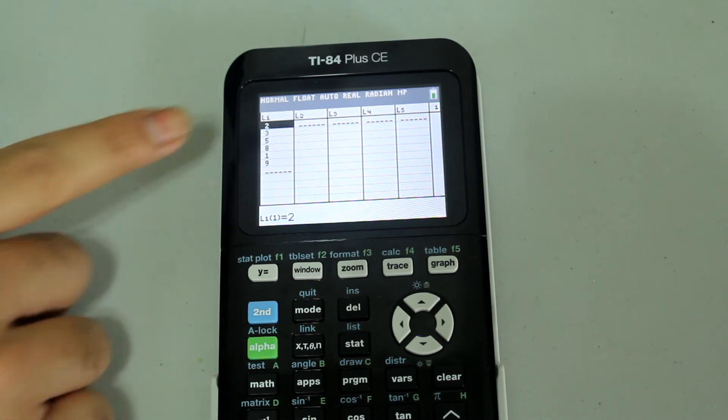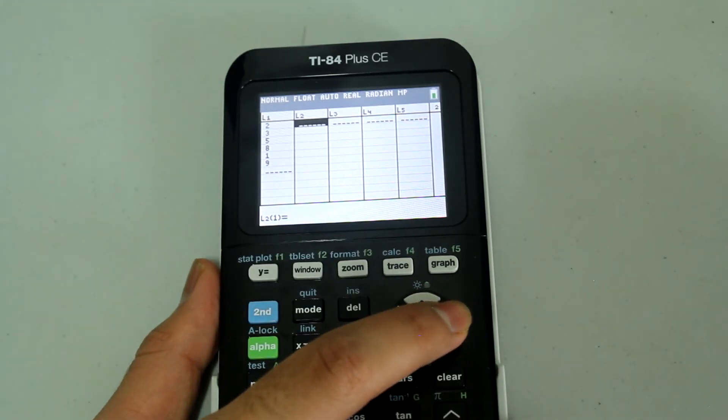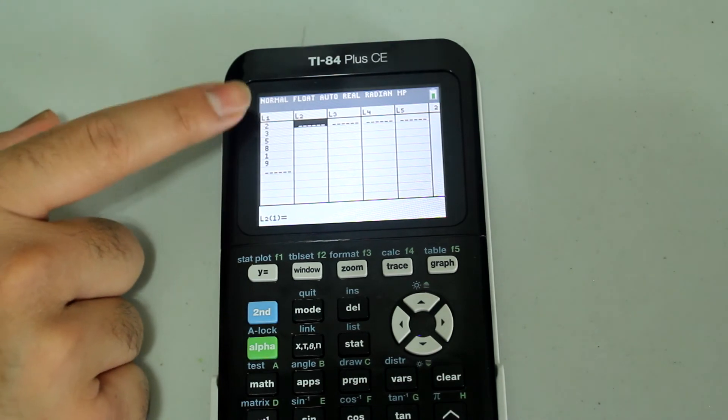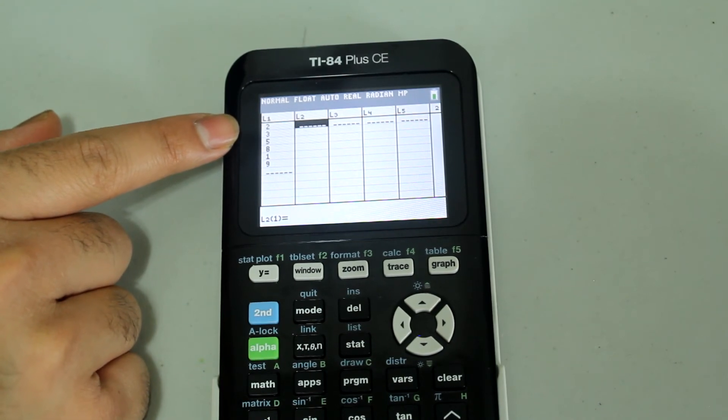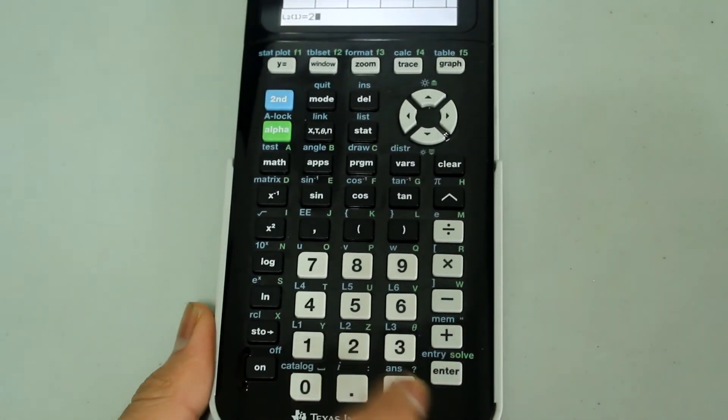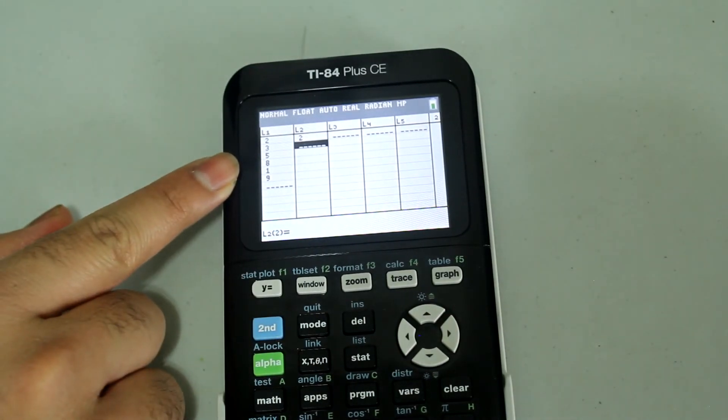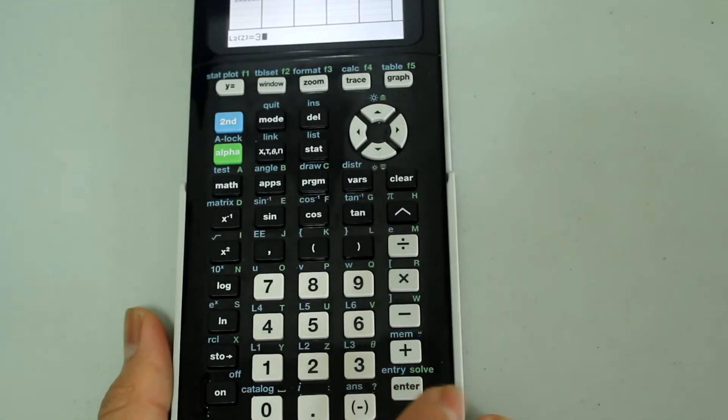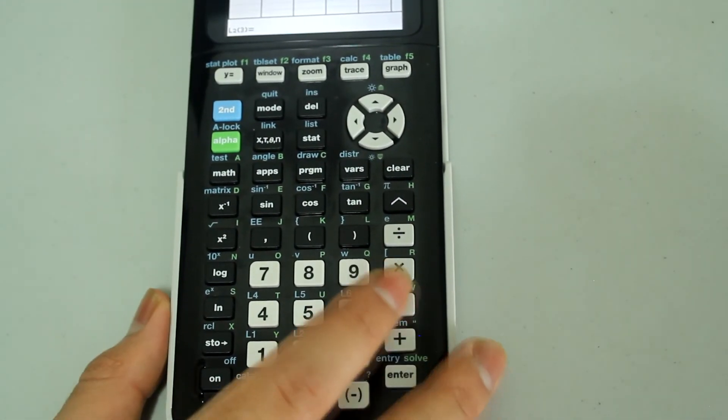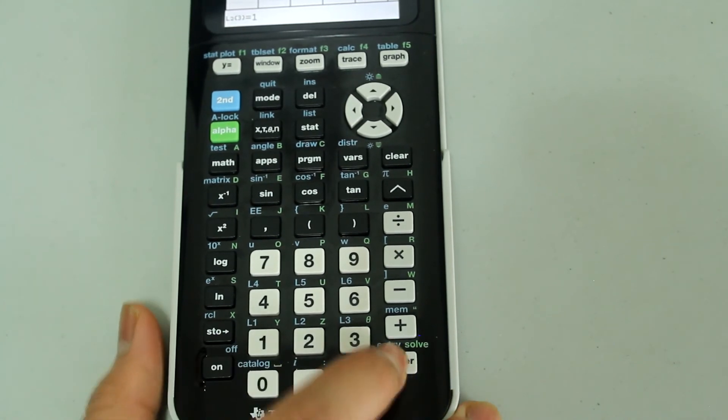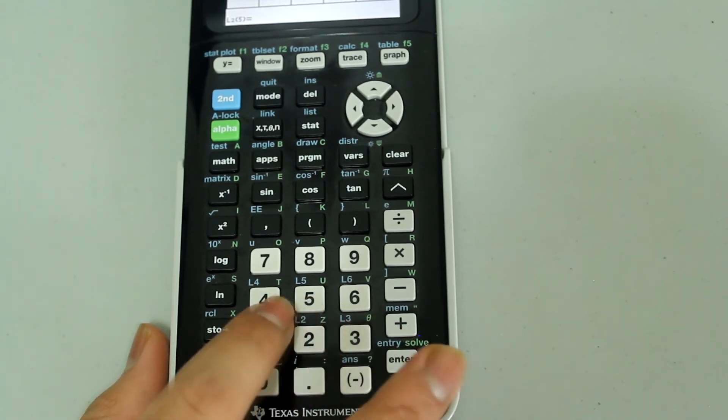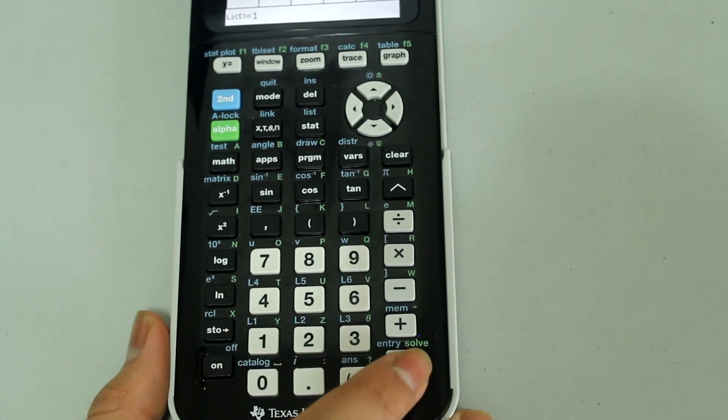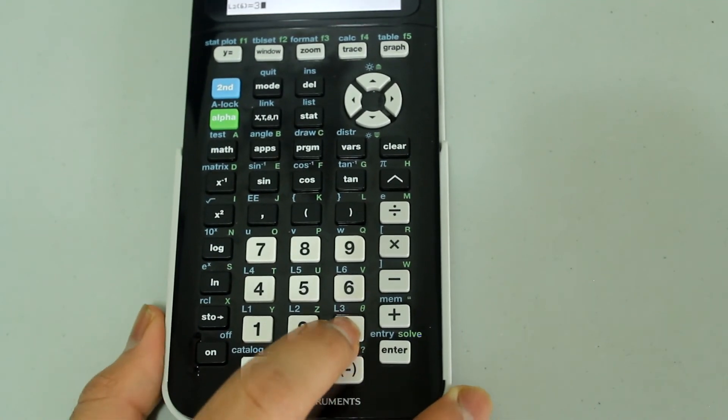So next to 2, I'm going to arrow over to list 2, and I'm going to type in how many times the value 2 appears in my set, and that's twice, so I'm going to type in 2 and press enter. Then I'm going to type in how many times 3 appears, which is 3 times, so just press 3 and enter. 5 appears once, so just press 1 and enter. 8 appears twice, so press 2 and enter. 1 appears once, so 1 and enter. 9 appears three times, so press 3 and enter.